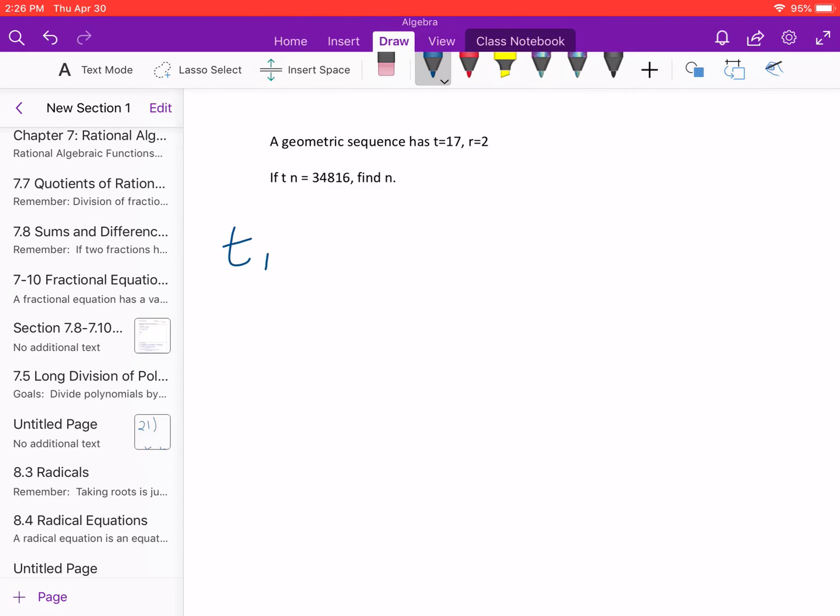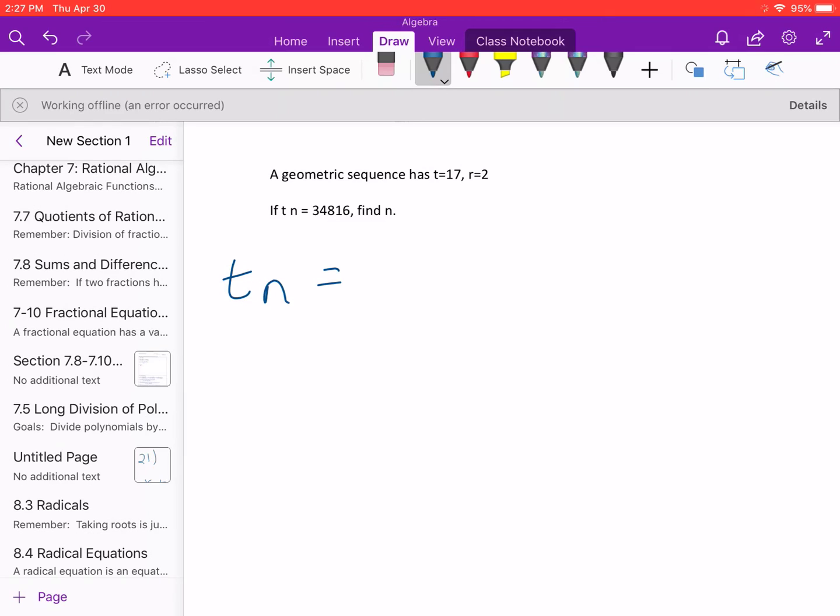So to refresh your memory, t sub n equals t, that's our initial t, put an i there, times r all raised to the n minus 1.